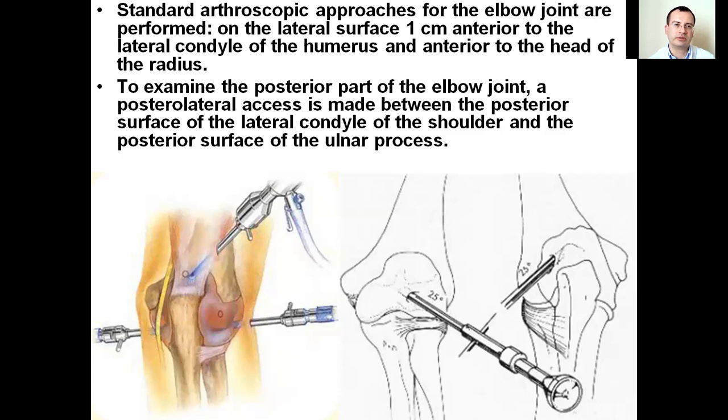Standard arthroscopic approaches for the elbow joint are performed on the lateral surface one centimeter anterior. To examine the posterior part of the elbow joint, the posterolateral axis is made between the posterior surface of the lateral condyle of the humerus and the posterior surface of the ulnar process.